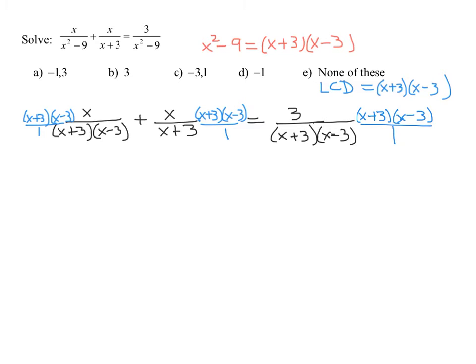And if I've done this correctly all my denominators will reduce away. So on my first term x plus 3 reduces with x plus 3 x minus 3 with x minus 3 and I get left with x. Plus x times x minus 3 equals and finally on the right hand side x plus 3 reduces x minus 3 reduces and I just get left with 3 over 1 or 3.